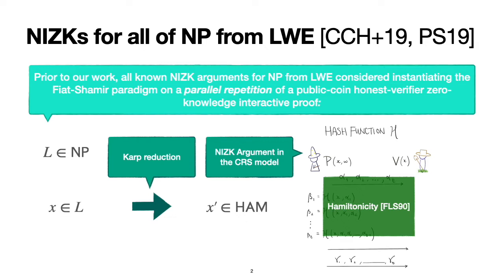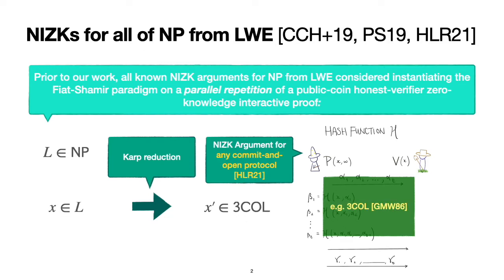This uses some underlying protocol for Hamiltonicity such as FLS90. The work of HLR21 extends this to any commit-and-open protocol, such as the 3-coloring protocol given by GMW86.